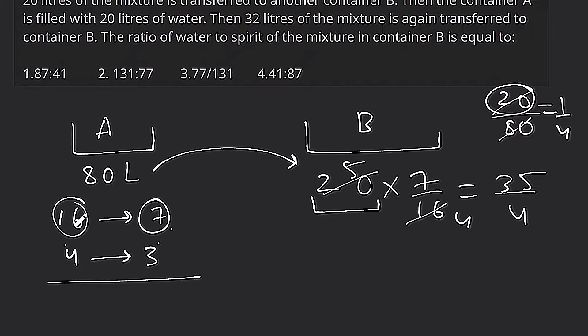Now if we multiply: 16 fours is 64 and 7 threes is 21. Meaning total mixture is 64, and 21 is spirit. So after the replacement, spirit remaining in container A is 21 out of 64.